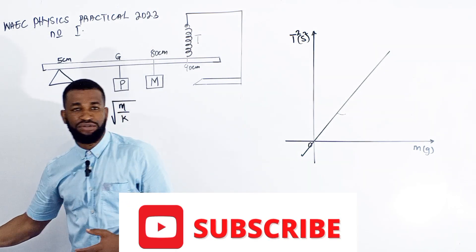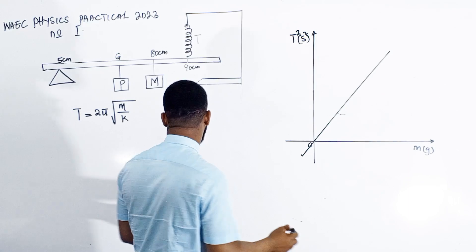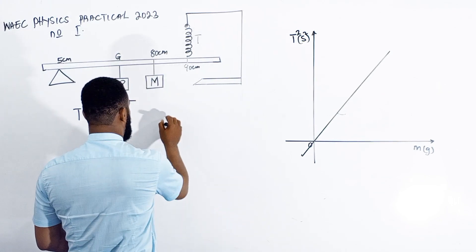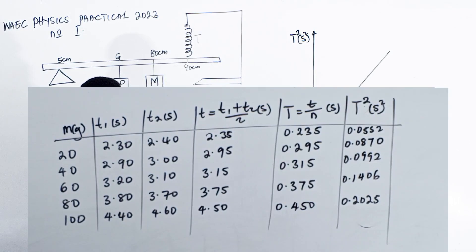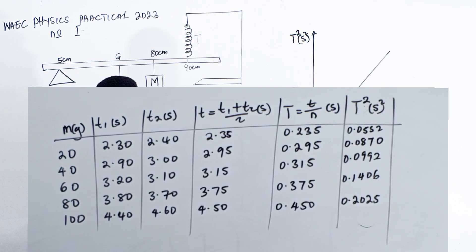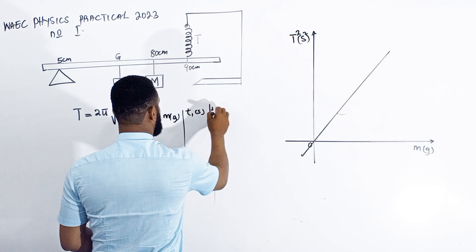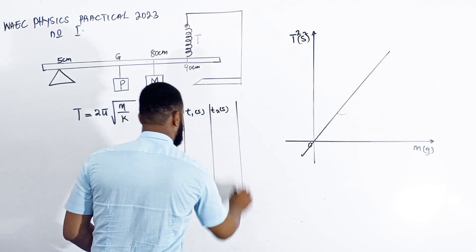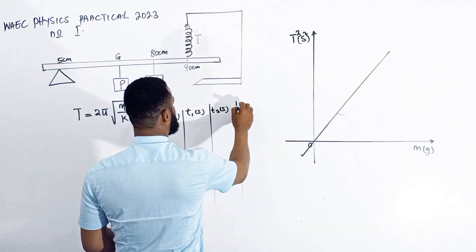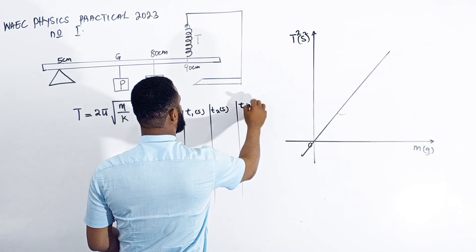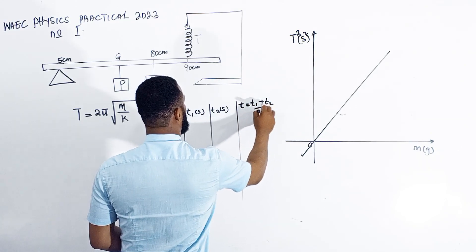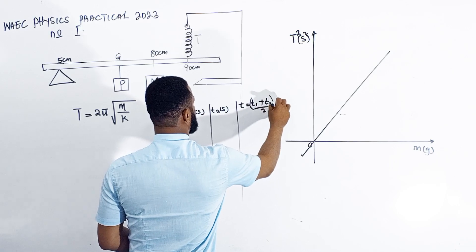When you do this experiment, your table of values will have M, then T₁ in seconds, T₂ in seconds, and then T = (T₁ + T₂)/2 in seconds.